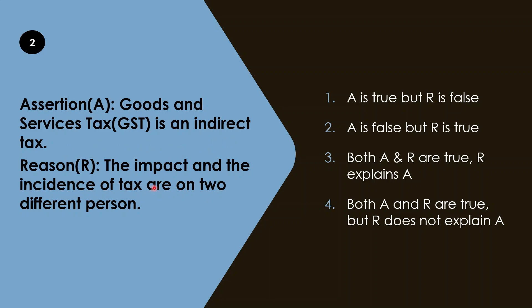Now let's understand the reason. The reason given is that the impact and the incidence of tax are on two different persons. That's also true. Impact refers to who is legally responsible for paying it — in our case, the seller. Incidence of tax refers to who actually bears the burden — which is the consumer. So in the case of GST, businesses collect the tax from customers and remit it to the government, making it an indirect tax where impact and incidence fall on different persons.